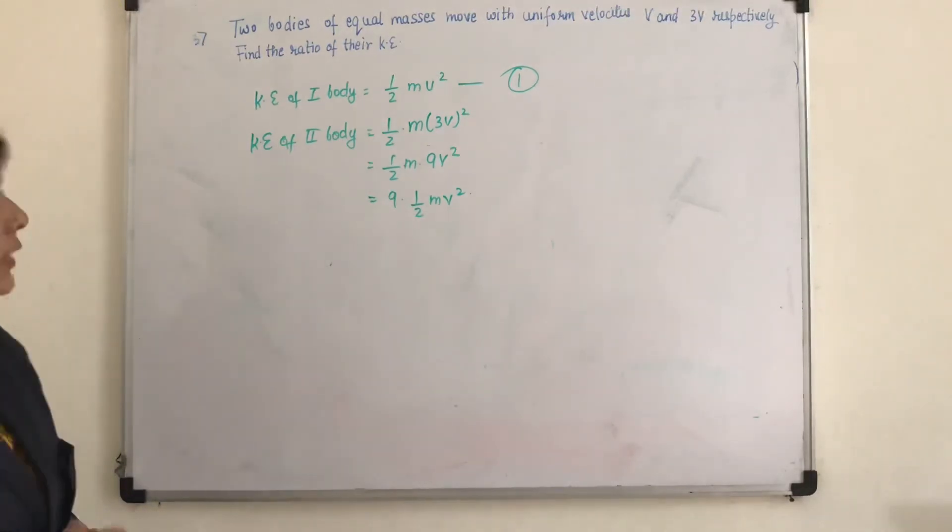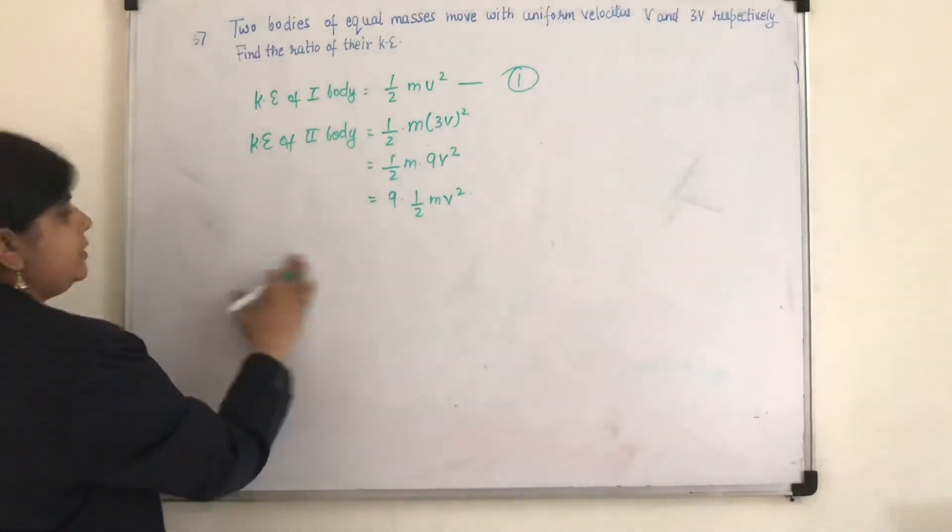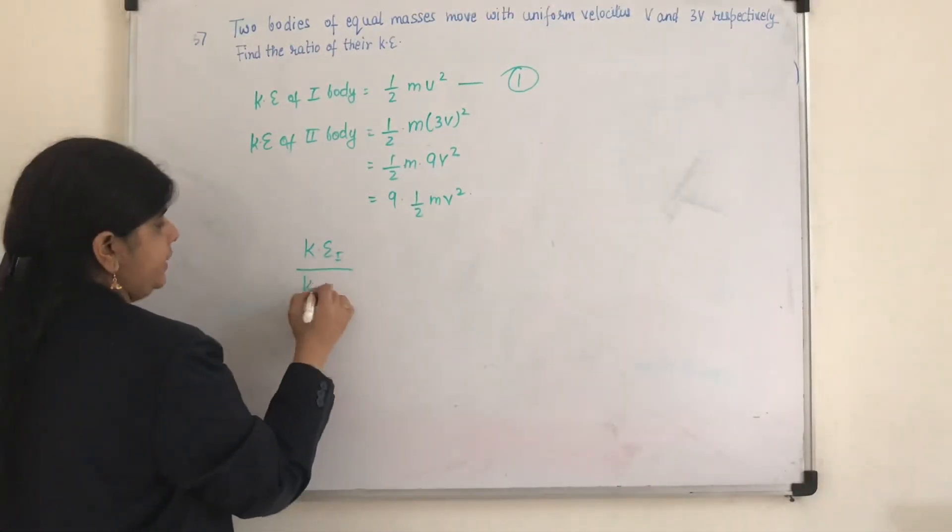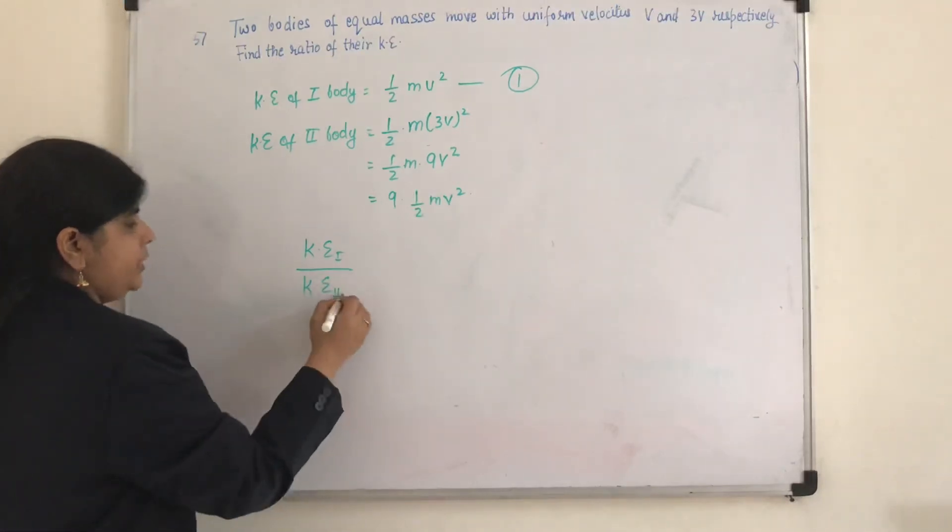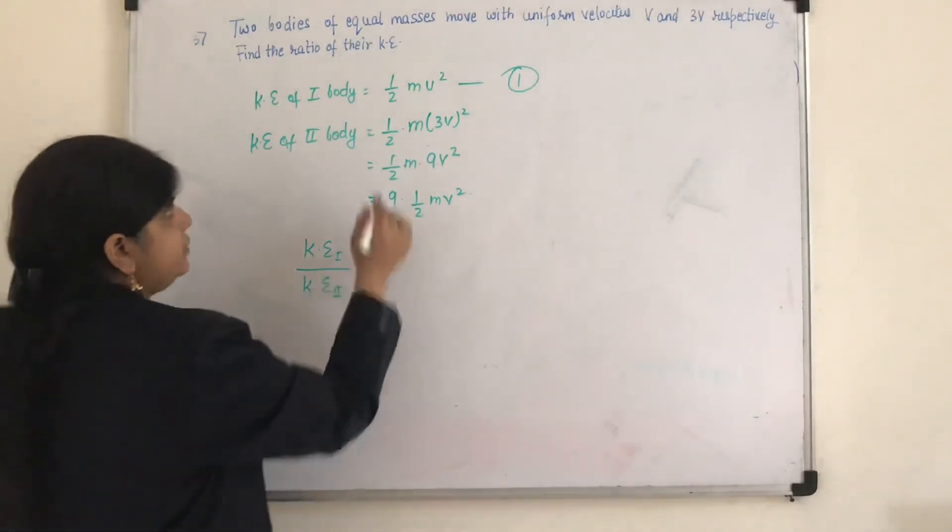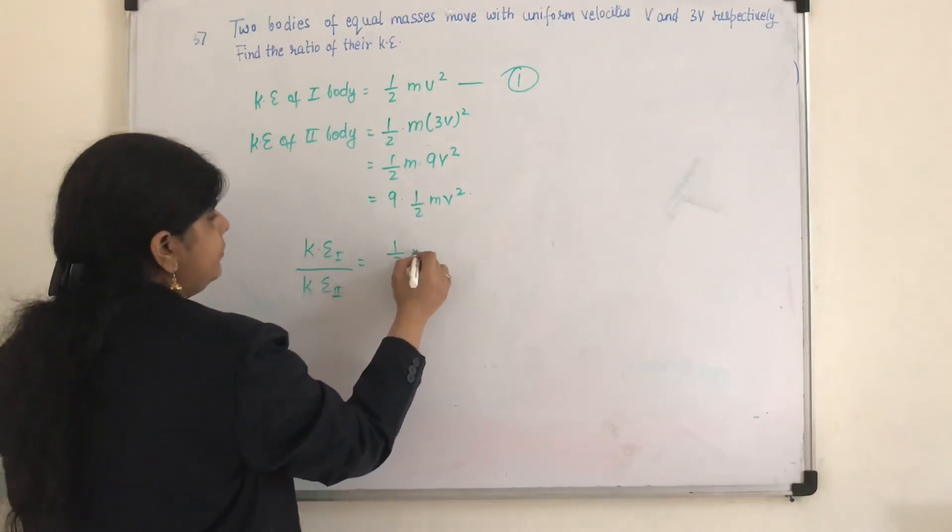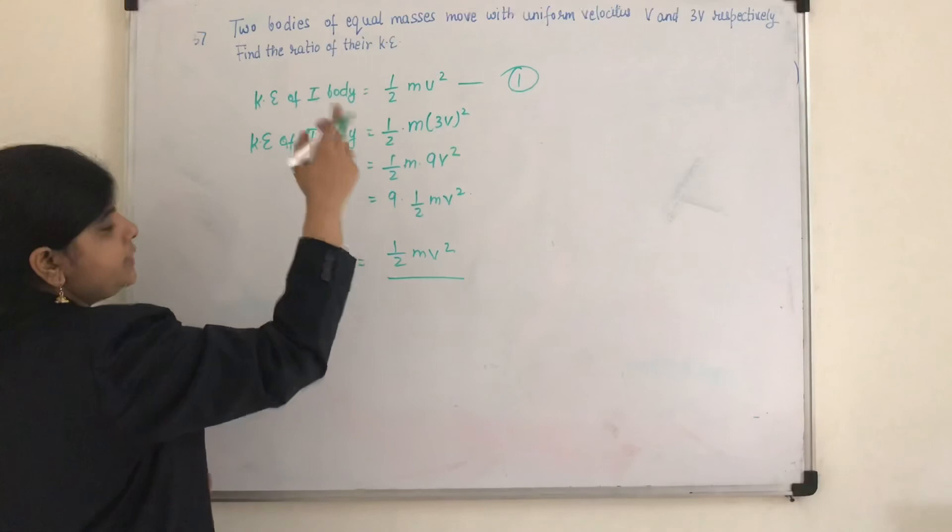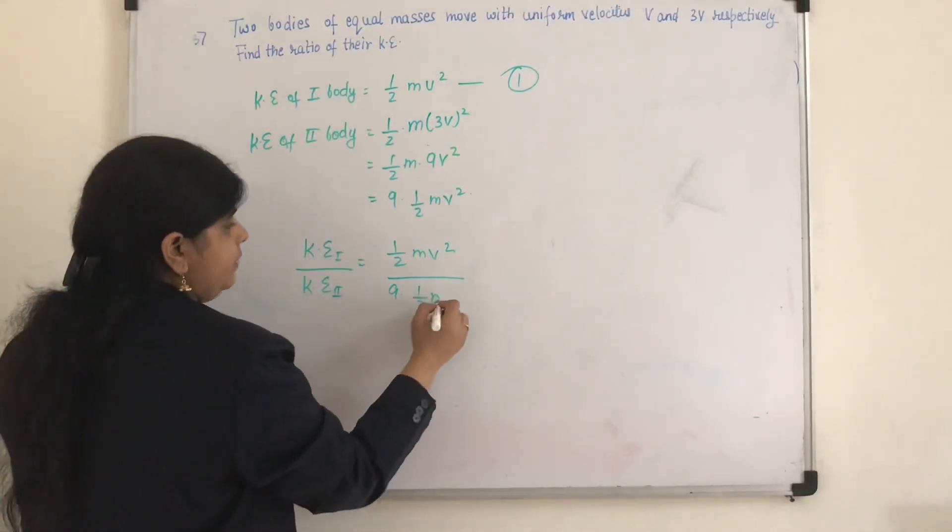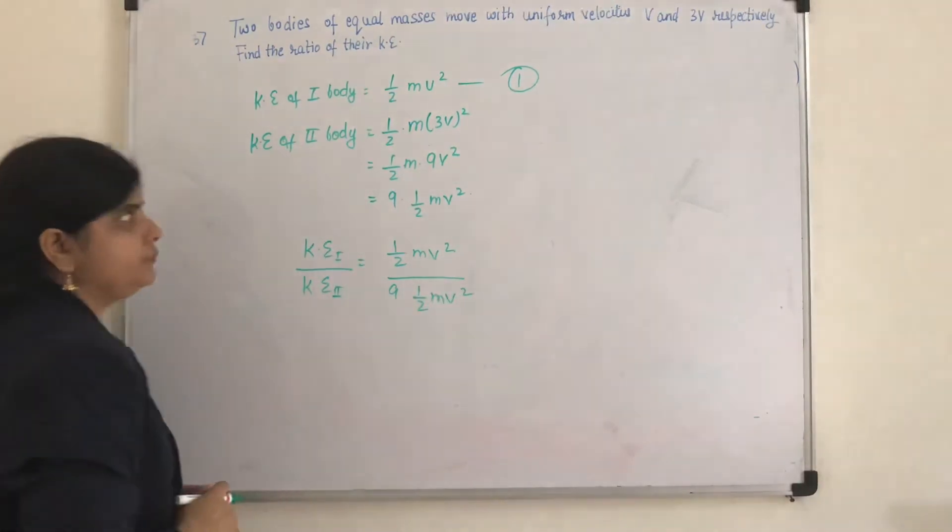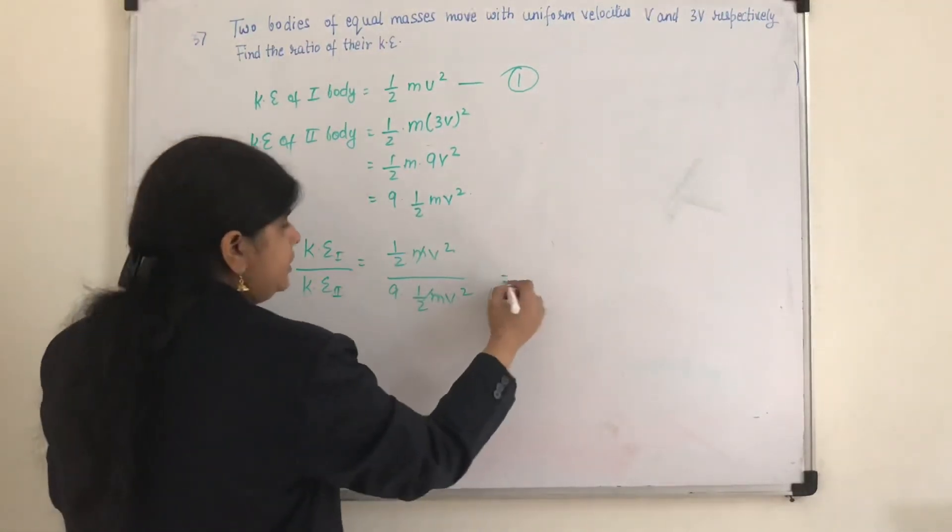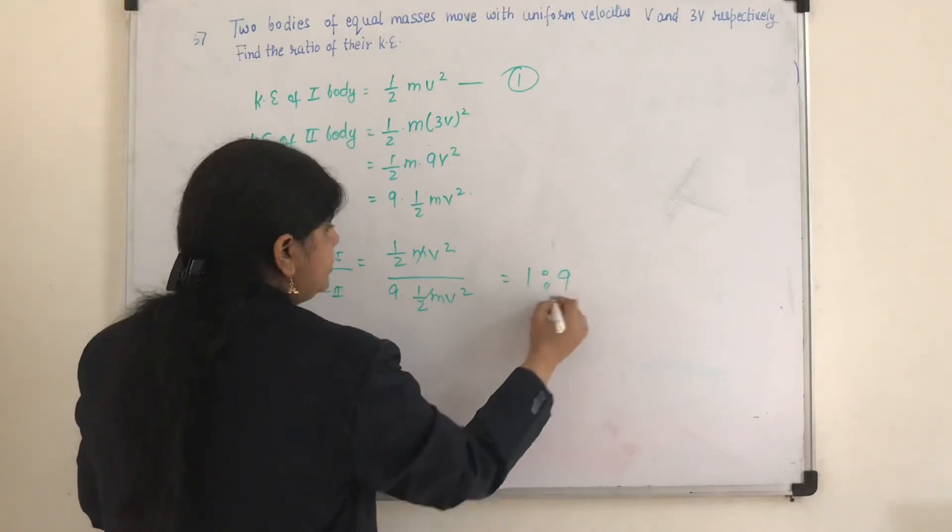Now what is the question? Find the ratios of their kinetic energy. So kinetic energy of first body divided by kinetic energy of the second body. So what is the kinetic energy of first body? It is half mv square. And what is the kinetic energy of the second body? It is 9 times half mv square. So these two will get cancelled. So the ratio will be 1 is to 9.